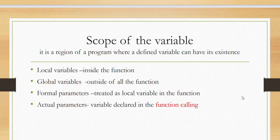Next one is scope of the variable. What is scope? It is the region of the program where a defined variable can have its existence.